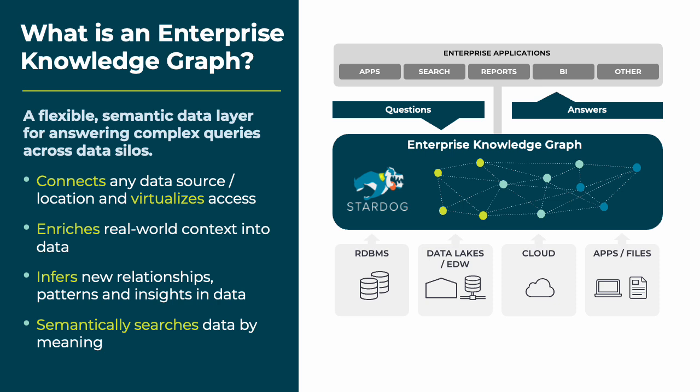An Enterprise Knowledge Graph can serve as a data platform and a methodology. As a platform, it functions as a kind of data fabric that links data across the enterprise. As a methodology, a Knowledge Graph provides a layer of abstraction that separates the physical details of the data from the logical representation of the business concepts and knowledge the data contains. The Stardog Enterprise Knowledge Graph platform is a flexible, reusable data layer for answering complex queries across data silos, unifying data based on its meaning and creating a connected network of knowledge to power your business.